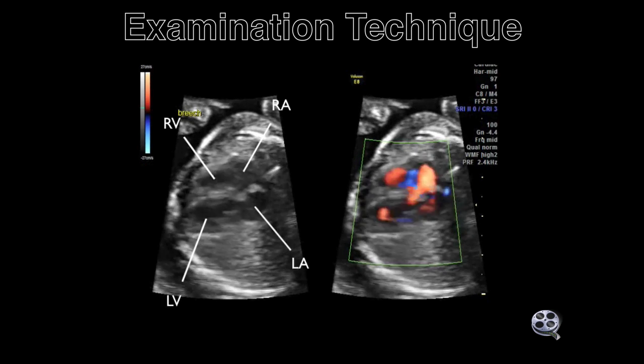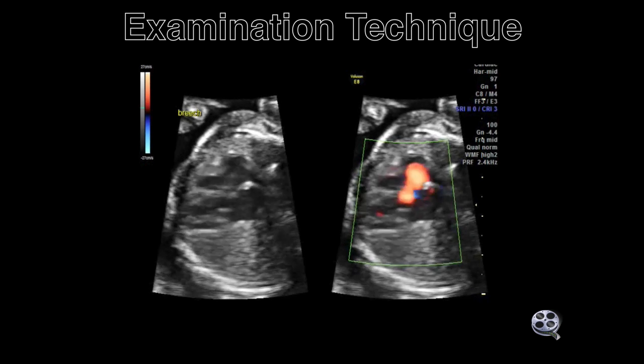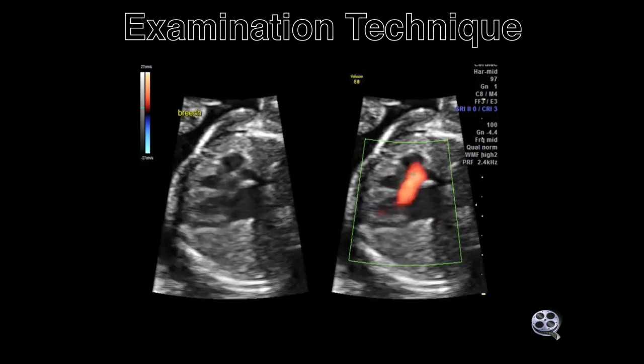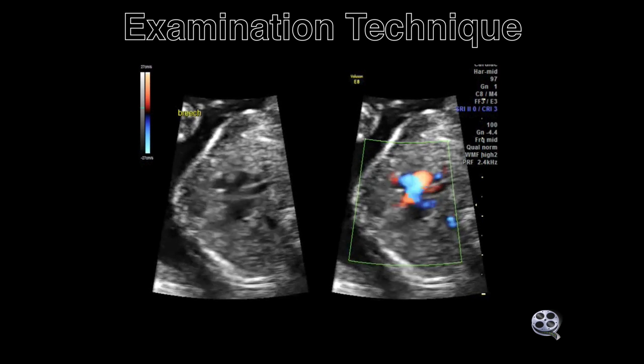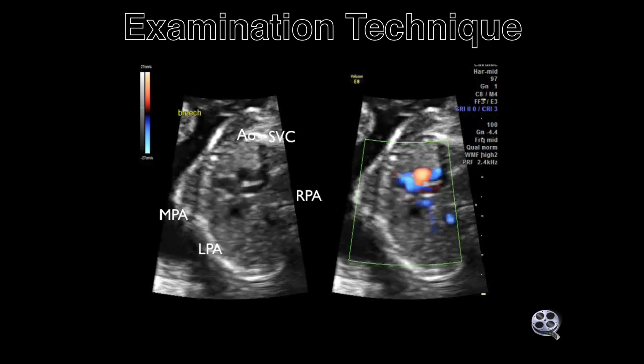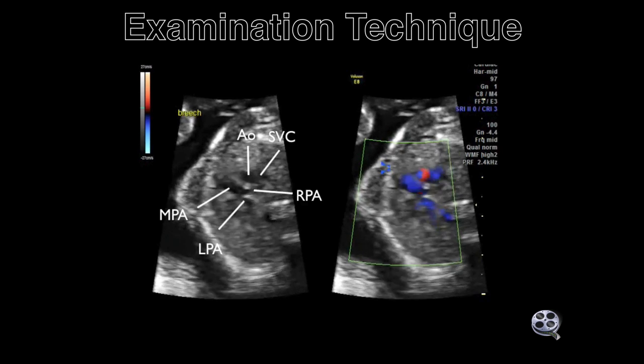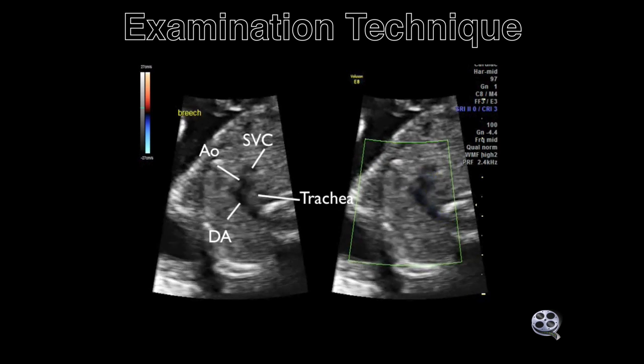This is a transverse sweep with the fetus in the breech position. The simultaneous images demonstrate the B-mode on the left and the power Doppler on the right.